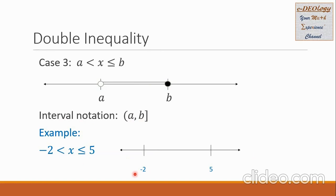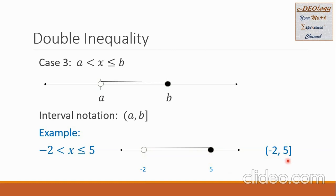Example: on the number line, negative 2 is on the left side and 5 is on the right. We connect the two numbers. For negative 2, we put a hole because it's not part of the solution set. For 5, we put a solid dot because 5 is part of the solution set. For the interval notation, we write the end numbers negative 2 and 5. For negative 2, we use parentheses because it is not part of the solution set. For 5, we use a square bracket because 5 is part of the solution set.